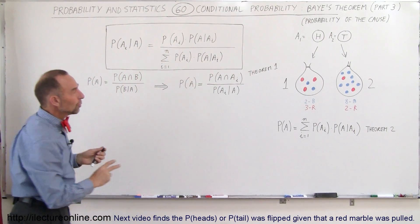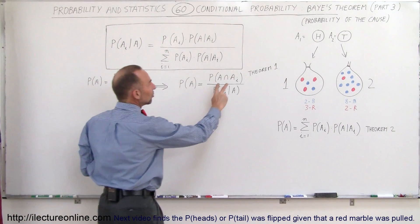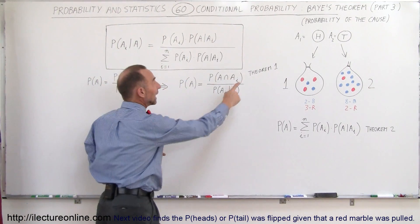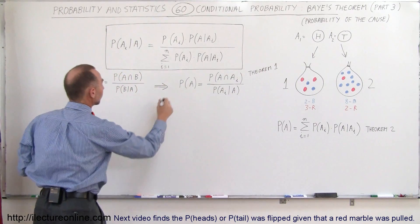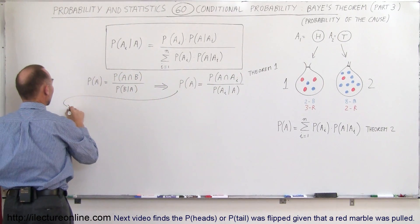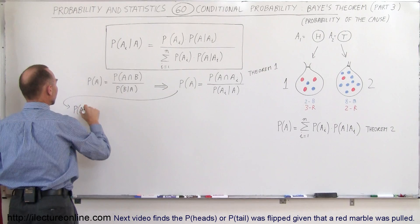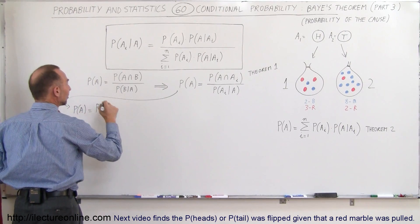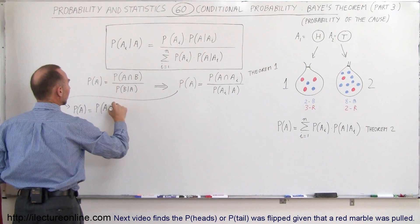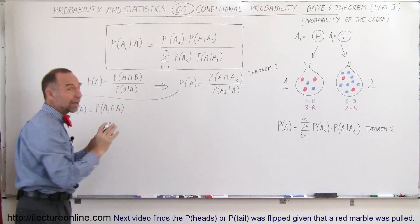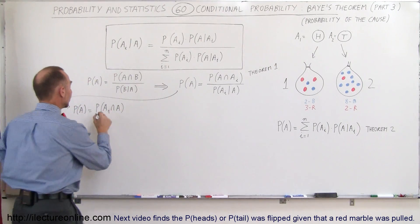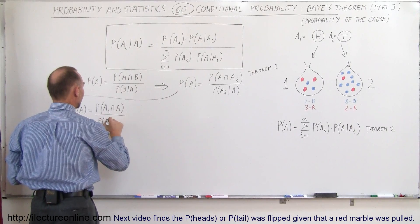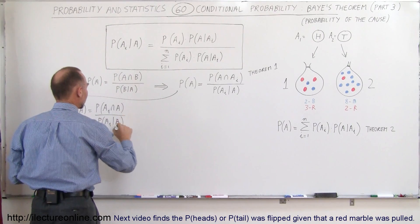Since this is the intersection of A and A sub i, we can turn that around and put A sub i on the left side. So we can say that the probability of A occurring equals the probability of the intersection of A sub i with A, divided by the probability that A sub i will occur provided that A has occurred.